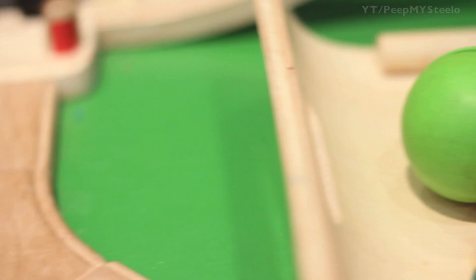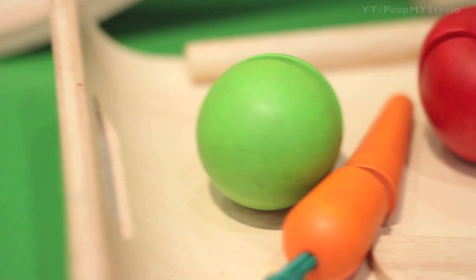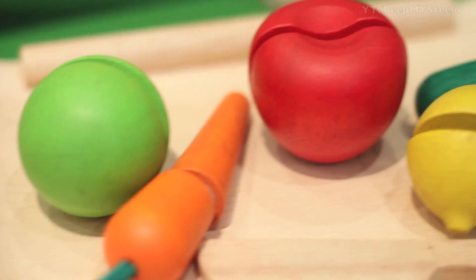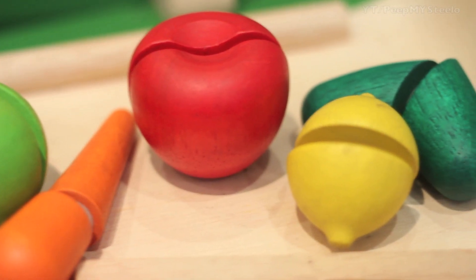We're going to check out some wooden toy food made by Plan Toys. It has both vegetables and fruit. It's made from rubber wood, 100% organic.